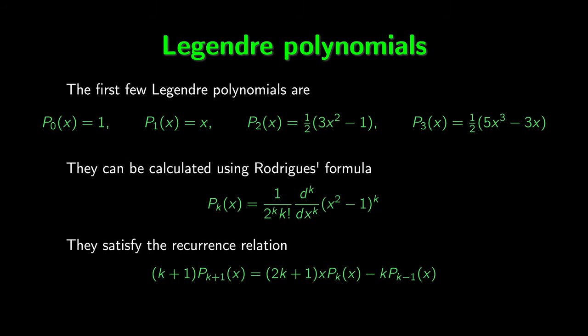Let's now look in more detail at the Legendre polynomials. The first few are: p0(x)=1, p1(x)=x, p2(x) = (1/2)(3x²−3x). The kth Legendre polynomial has degree k. There's a general way to calculate Legendre polynomials using Rodrigues' formula: p_k(x) = (1/(2^k · k!)) · d^k/dx^k [(x²−1)^k]. The Legendre polynomials also satisfy a recurrence relation where we can obtain p_{k+1} in terms of p_k and p_{k−1}.